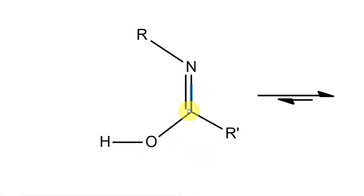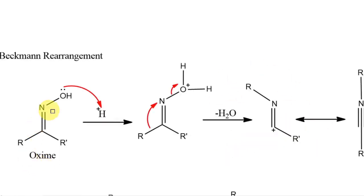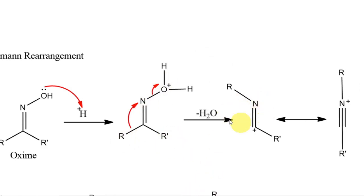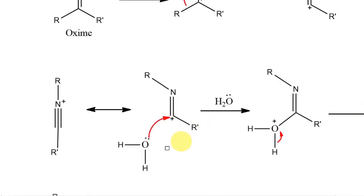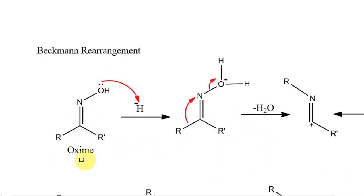After deprotonation, we have a structure with a double bond and an OH on the carbon. This can undergo tautomerism: the hydrogen moves onto nitrogen, a double bond forms between oxygen and carbon, and the C=N double bond is lost. This gives the amide — the product of Beckman rearrangement. An oxime is converted into an amide.